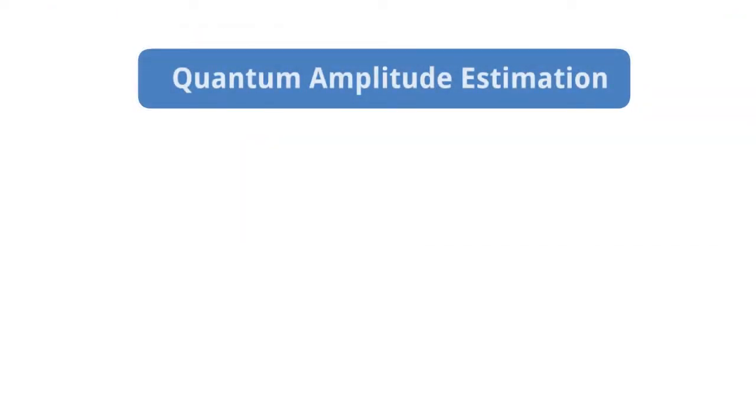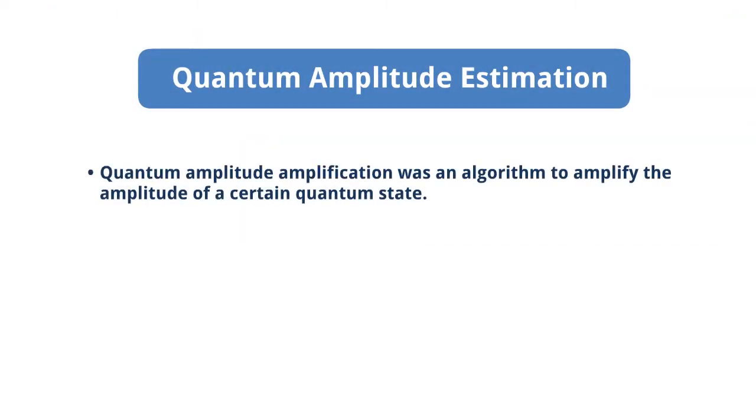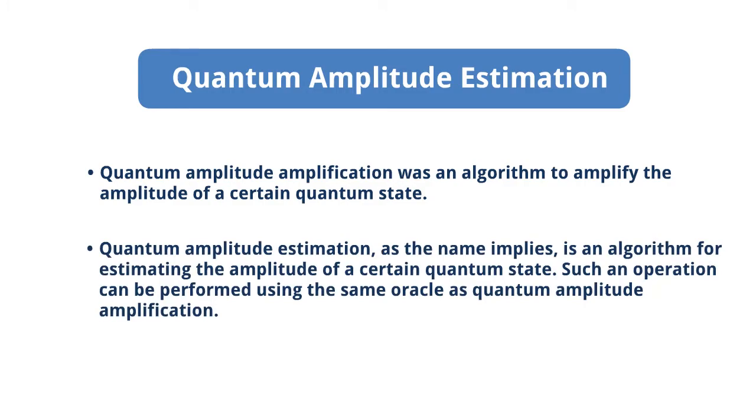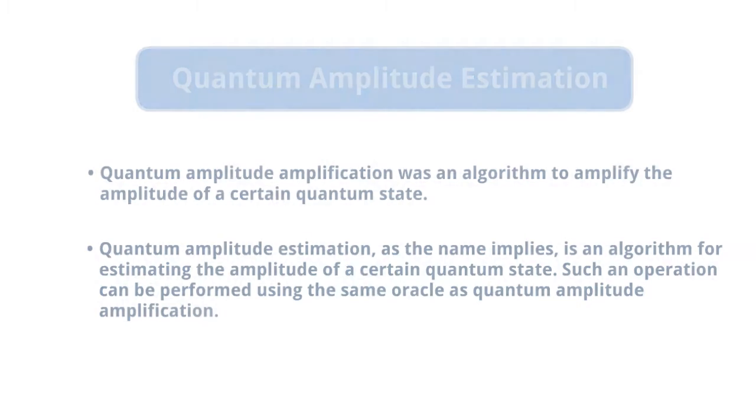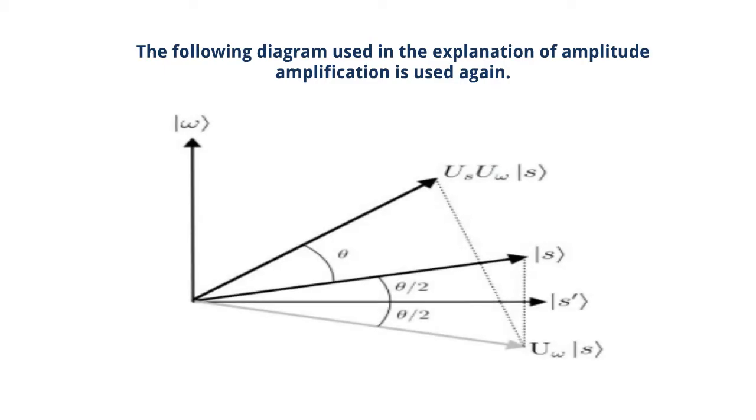Quantum amplitude estimation. Quantum amplitude amplification was an algorithm to amplify the amplitude of a certain quantum state. Quantum amplitude estimation, as the name implies, is an algorithm for estimating the amplitude of a certain quantum state. Such an operation can be performed using the same oracle as quantum amplitude amplification. The following diagram used in the explanation of amplitude amplification is used again.